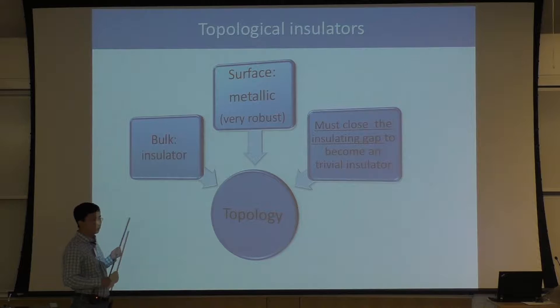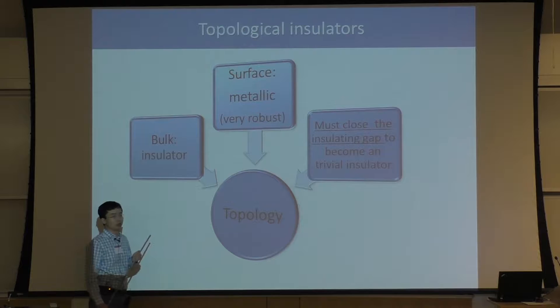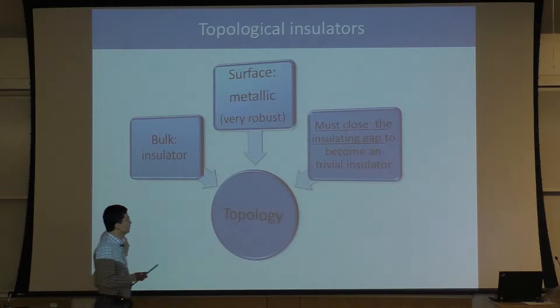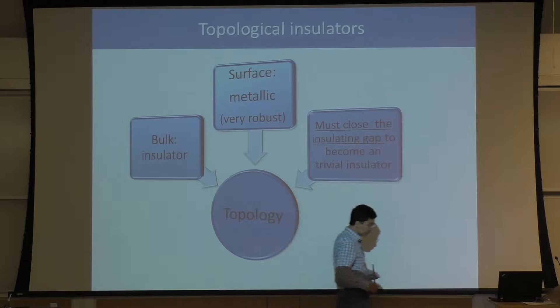First of all, the bulk of the material needs to be an insulator. Secondly, the surface or the edge of a 2D sample is actually a very robust metal. And finally, if we want to turn a topological insulator into an ordinary insulator, we need to go through a phase transition, and this phase transition needs to close the insulating gap and reopen it.